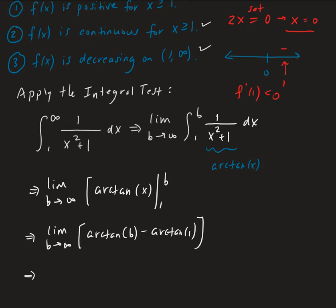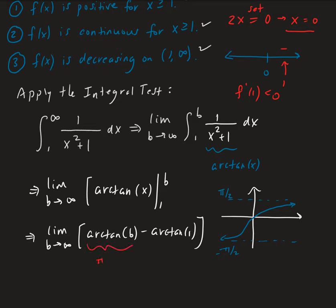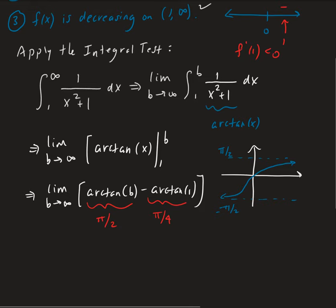As b goes to infinity, recall that arctangent has two horizontal asymptotes: one at pi over 2 and one at negative pi over 2. As b approaches infinity, arctangent of b approaches pi over 2. And arctangent of 1 is pi over 4. So the overall limit is pi over 2 minus pi over 4, which gives us pi over 4.